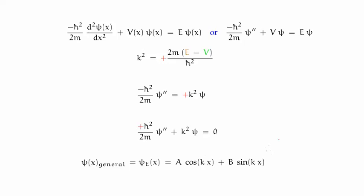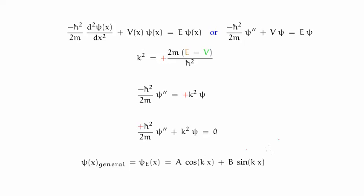So the general solution to your particle living in an infinite potential well will always be a linear combination of cosines and sines. And based on your boundary conditions — exactly where your well ends and starts — your coefficients A and B will either be zero or non-zero.